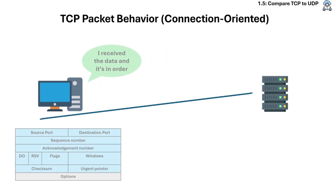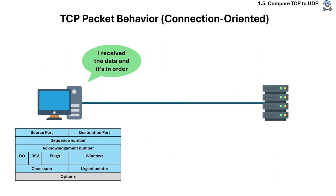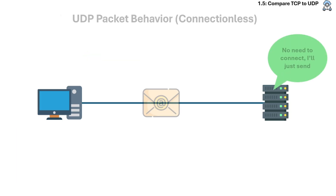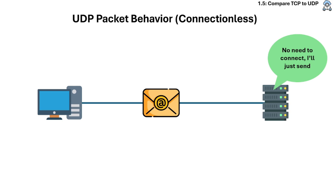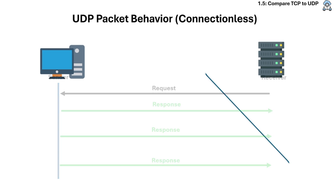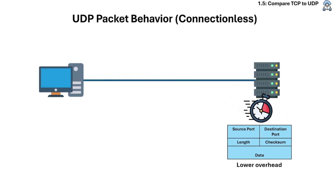TCP also delivers data in the correct order and retransmits lost or corrupted packets. For UDP, there's no connection setup — it just sends. There's no guarantee that packets will arrive or be in order, and UDP does not guarantee data sequencing. It is faster with lower overhead.